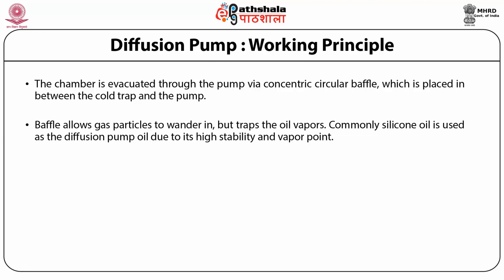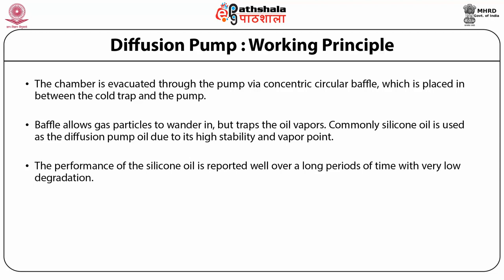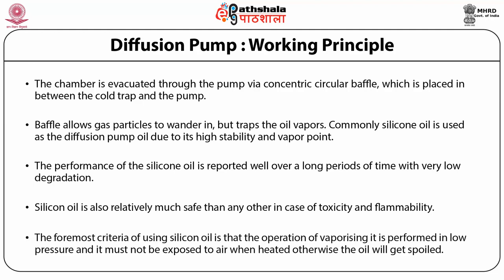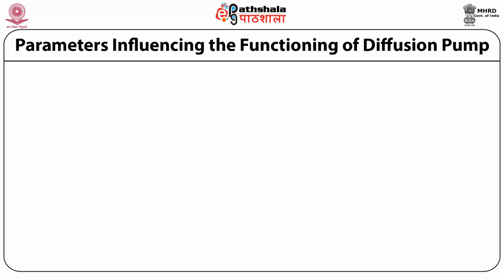Commonly silicon oil is used as the diffusion pump oil due to its high stability and high vapor point. The performance of the silicon oil is reported well over a long period of time with very low degradation. Silicon oil is also relatively much safer than any other in case of toxicity and flammability. The foremost criteria of using silicon oil is that the operation of vaporizing it is performed in low pressure and it must not be exposed to air when heated, otherwise the oil will get spoiled.